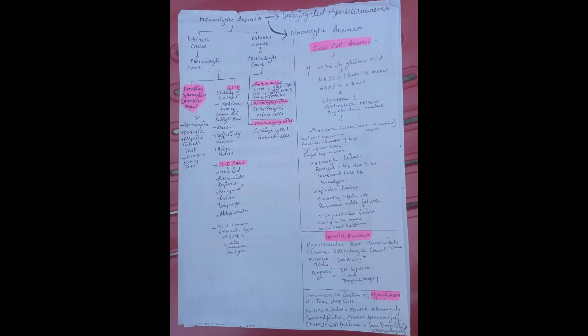The characteristic feature of myelofibrosis is the teardrop cells. The hallmark feature is massive splenomegaly or the prominent feature is massive splenomegaly. If the characteristic feature is asked, then you must mention the teardrop cell, if the answers consist of both splenomegaly and teardrop cell.